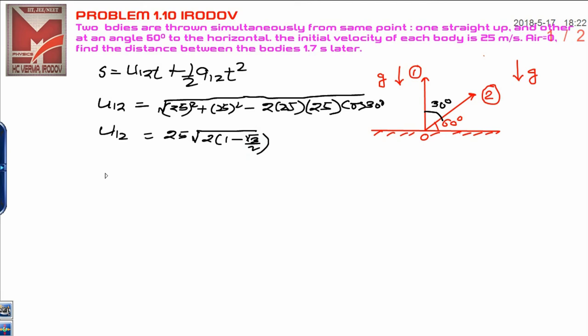Similarly, for relative acceleration of 1 with respect to 2, both have the same acceleration g. Therefore, the relative acceleration is g minus g, which finally equals zero.